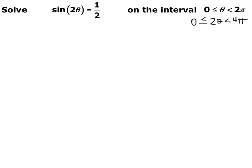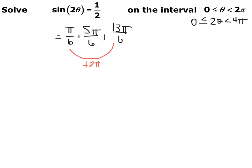Ignoring the 2 theta for now, we just want to know where sine equals 1/2. The first place sine equals 1/2 is pi/6, and the second place is 5pi/6. These are the angles between 0 and 2 pi. But we want to go between 0 and 4 pi because of the double angle, so I go around the circle again. Adding 2 pi to pi/6 gives 13pi/6, and adding 2 pi to 5pi/6 gives 17pi/6. So these four angles between 0 and 4 pi are where sine equals 1/2.